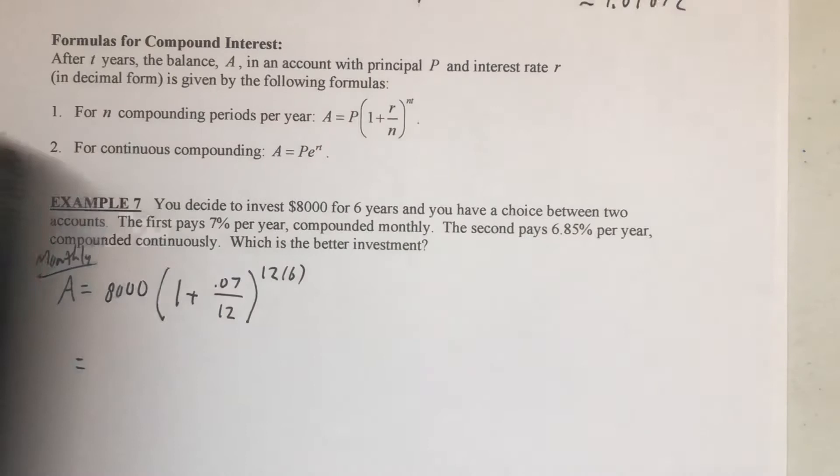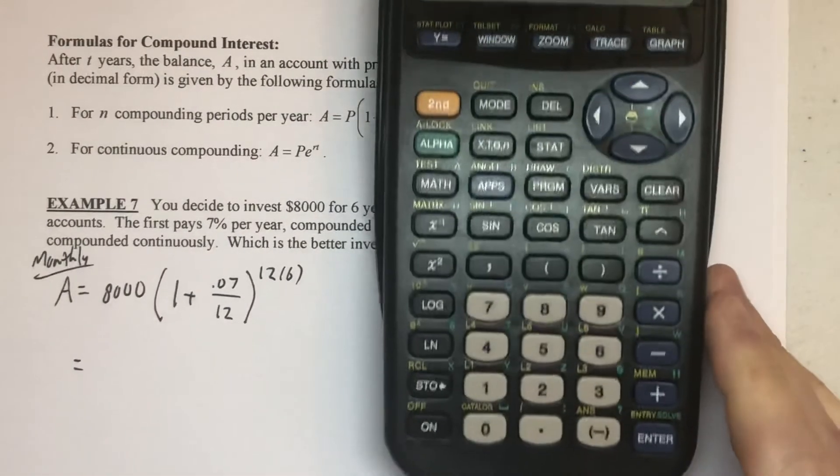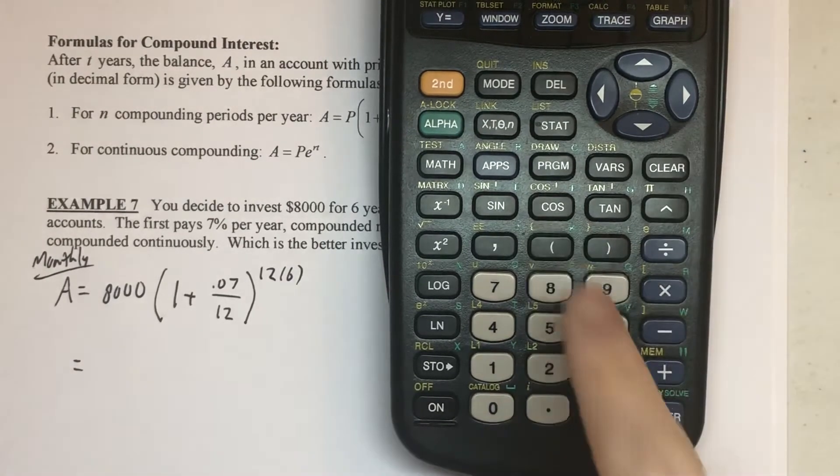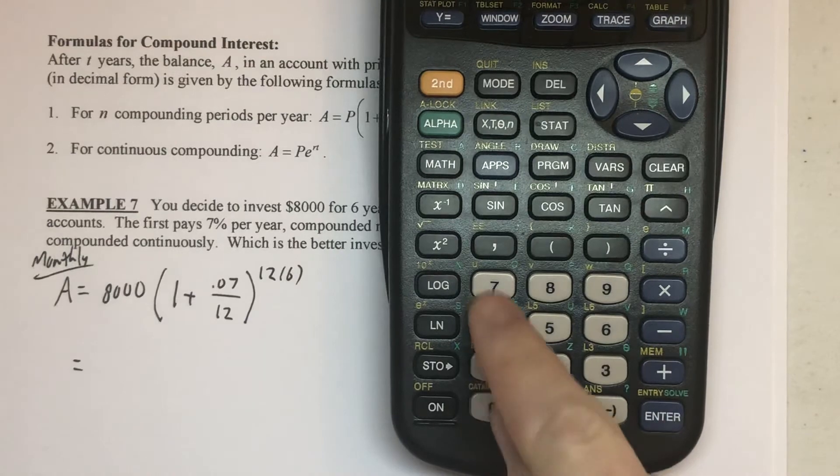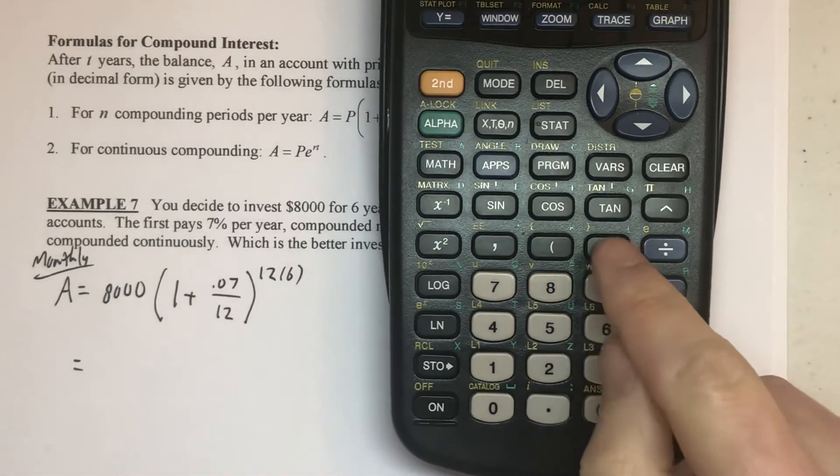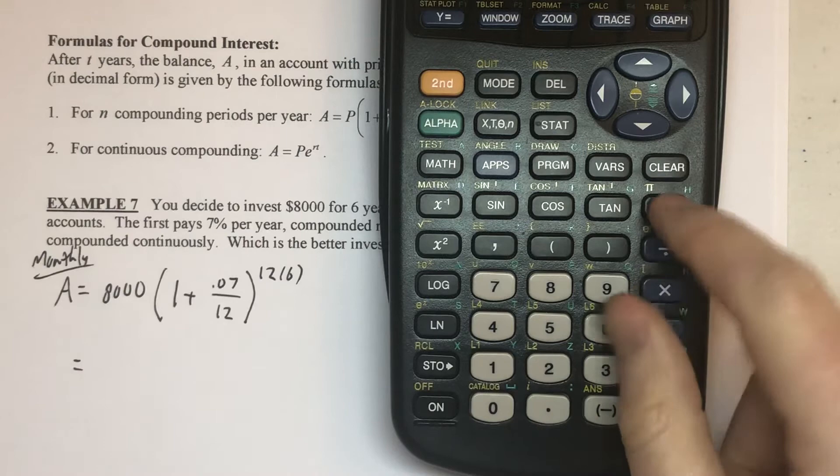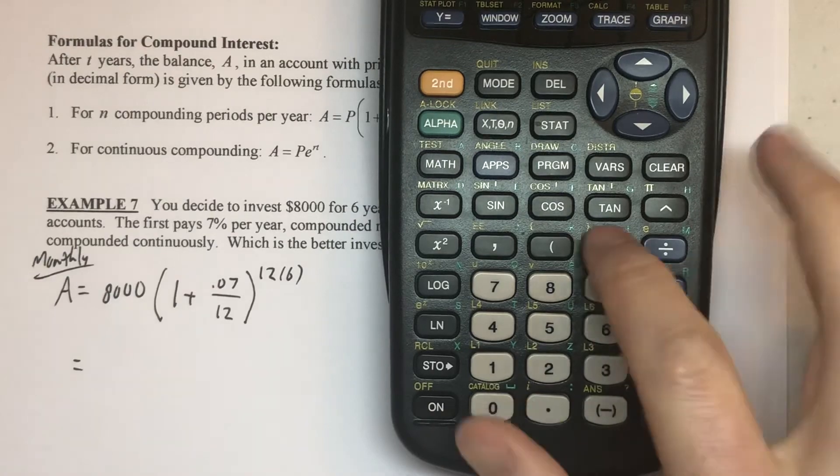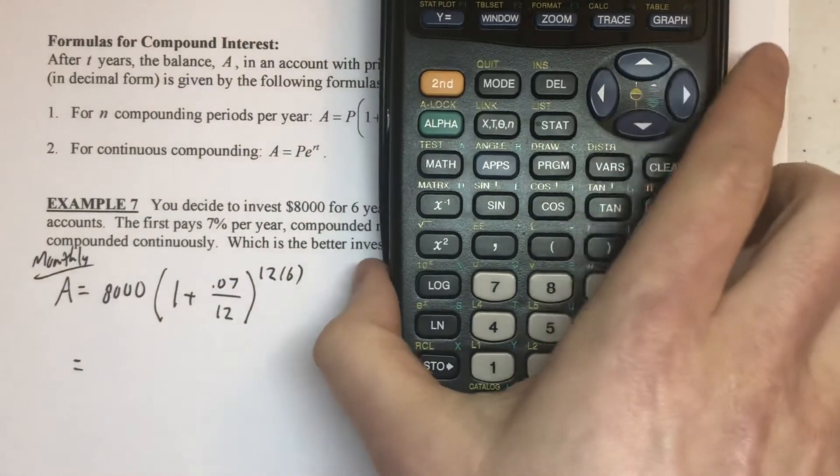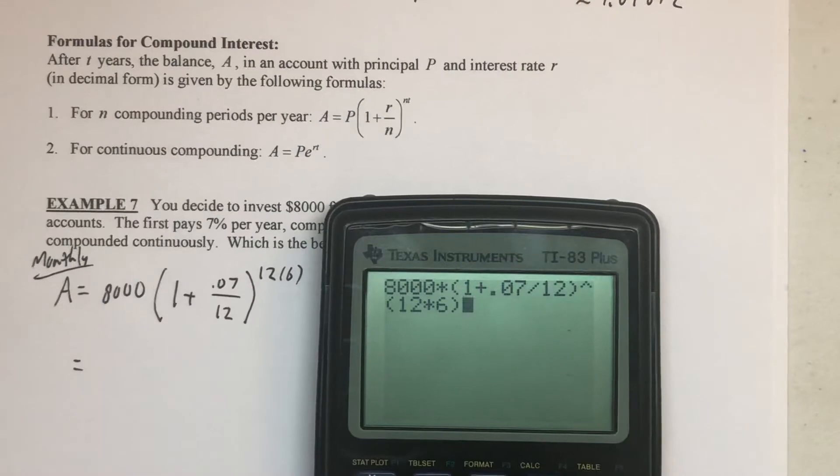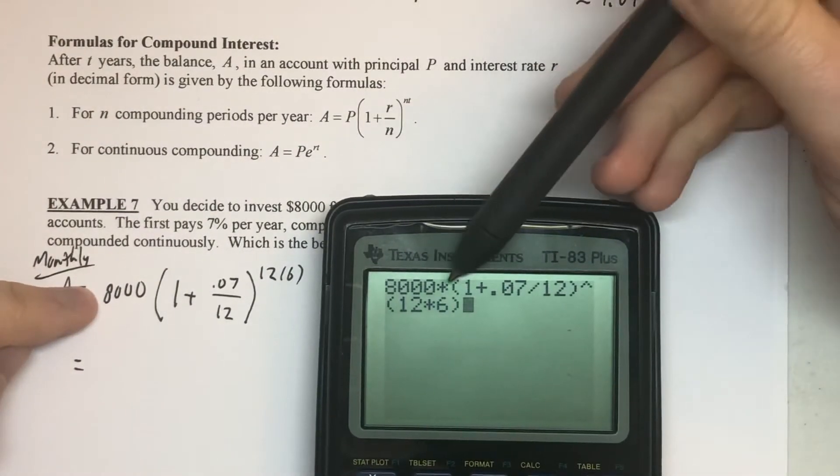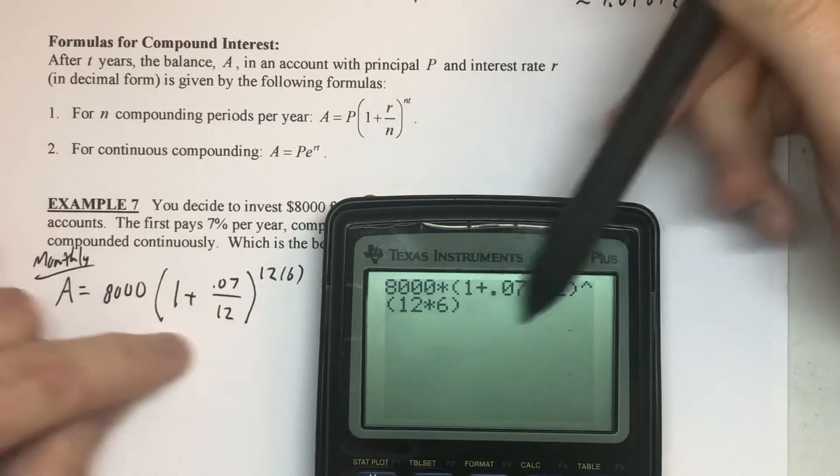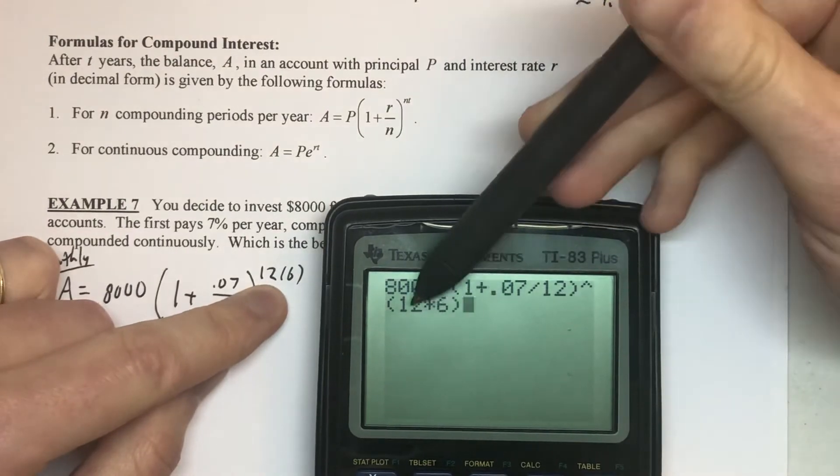Now, at this point we're just going to enter all that into our calculator. I'll go ahead and show you the buttons, and I'll show you what it looks like. So, I want 8,000 times the quantity. I'm going to use my parenthesis there, 1 plus 0.07 divided by 12, and I'll close the parentheses, and I'll raise that to the, and just to avoid any confusion here, I'll do 12 times 6 in parentheses, so it knows that whole thing is the exponent. Showing what I typed there, 8,000 times 1 plus the 0.07 divided by 12, and that whole quantity is being raised to the 12 times 6.